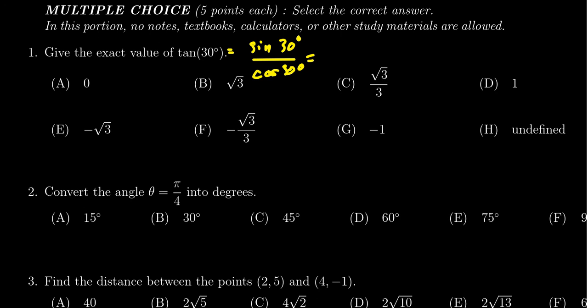Sine of 30 degrees is one half, and cosine of 30 degrees is the square root of three over two.